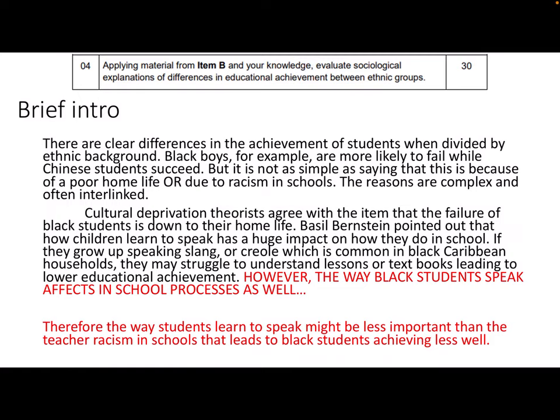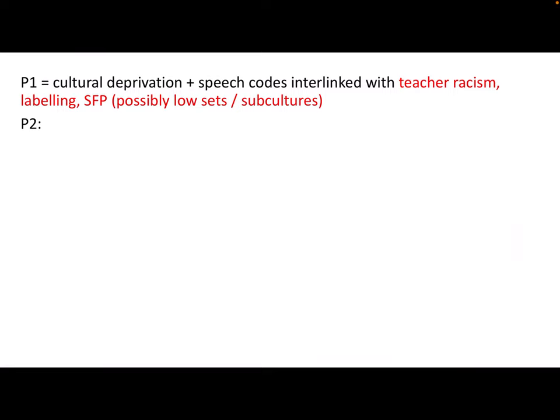Pause the lecture here and give yourself maybe five to ten minutes to finish that point about what happens to black students in schools, perhaps because of how they might speak. To summarize: the first point was on cultural deprivation — speech codes at home — linked with teacher racism in schools. Hopefully in your point you talked about labeling, self-fulfilling prophecy, and maybe the connection between being put in low sets and the formation of subcultures.